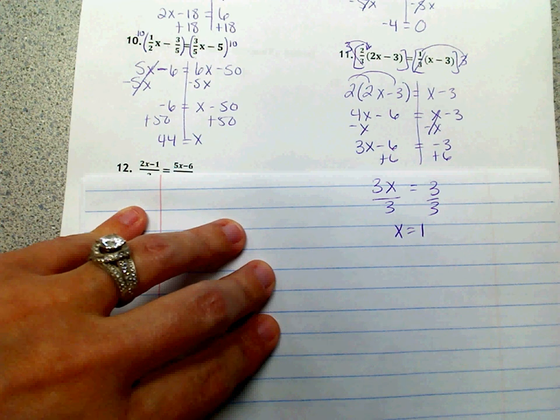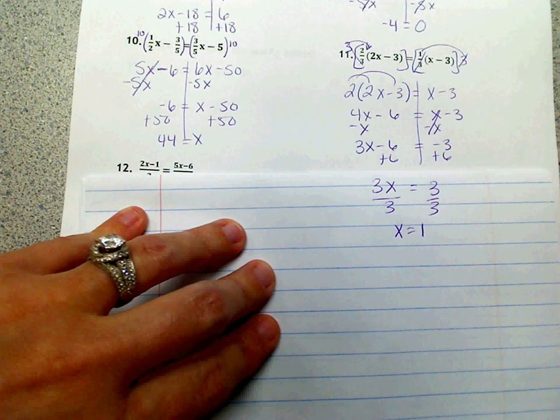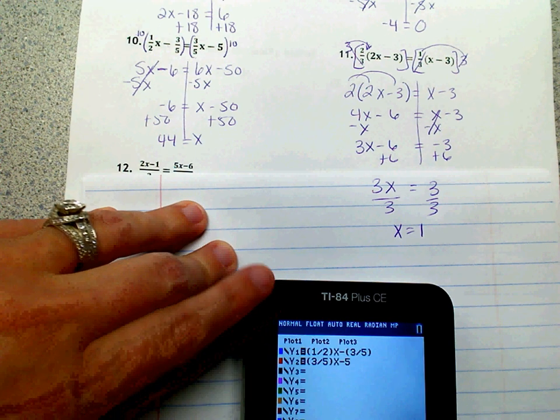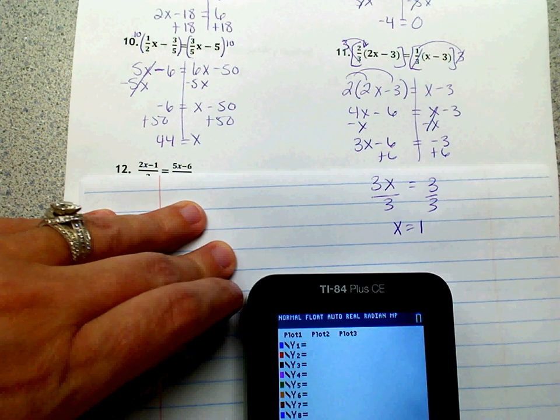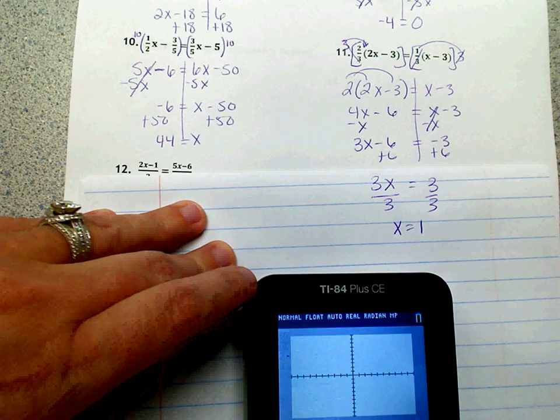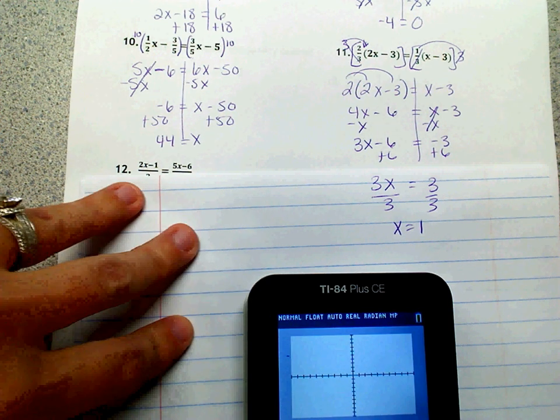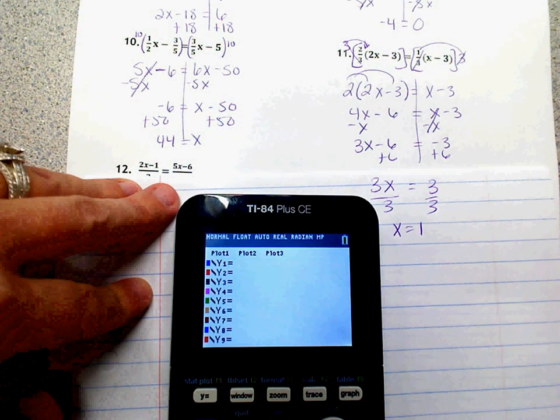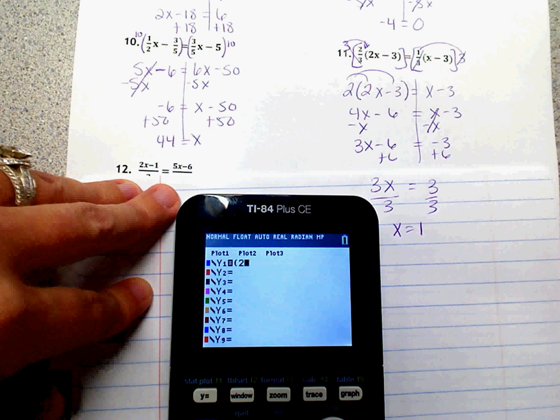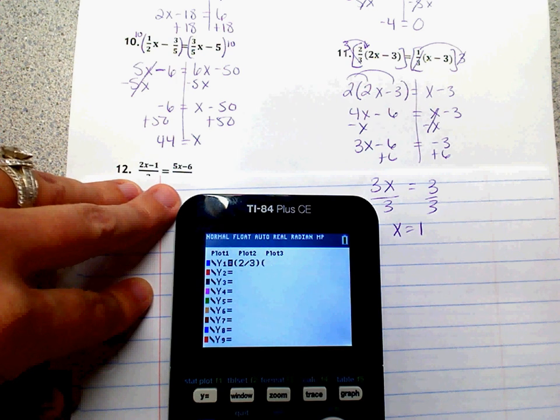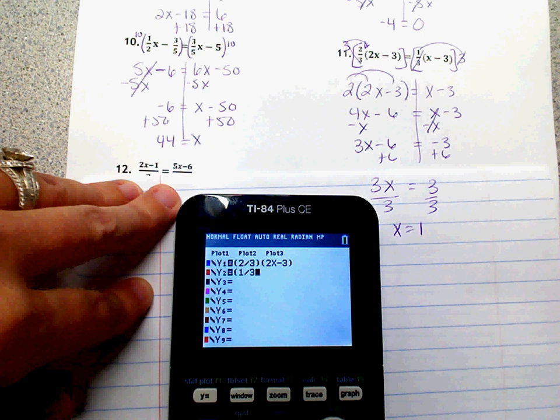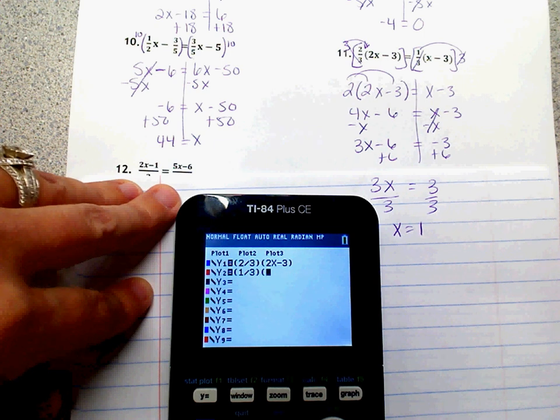So again, I'm going to graph that. I zoomed out several times, so I need to make sure that I set, redo my window, so I'm just going to hit zoom 6. So it's back to its normal screen. And then on the left side I've got 2/3, and then 2x minus 3. And then on the right side I have 1/3, and then in parentheses I have x minus 3.